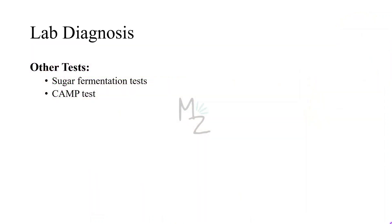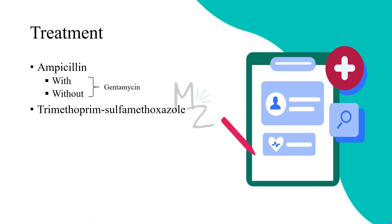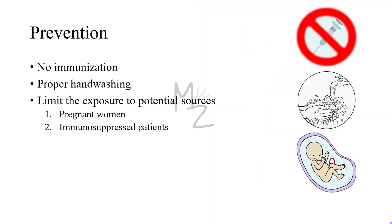Identification of Listeria monocytogenes is also made by sugar fermentation tests and the CAMP test. Treatment of invasive diseases such as meningitis and sepsis consists of ampicillin with or without gentamicin. If ampicillin is not useful, then trimethoprim-sulfamethoxazole can be used. Resistant strains of Listeria monocytogenes are rare. Prevention is difficult because there is no immunization; we can practice proper hand-washing and limit the exposure of pregnant women and immunosuppressed patients to potential sources such as farm animals and unpasteurized products like milk and raw vegetables.